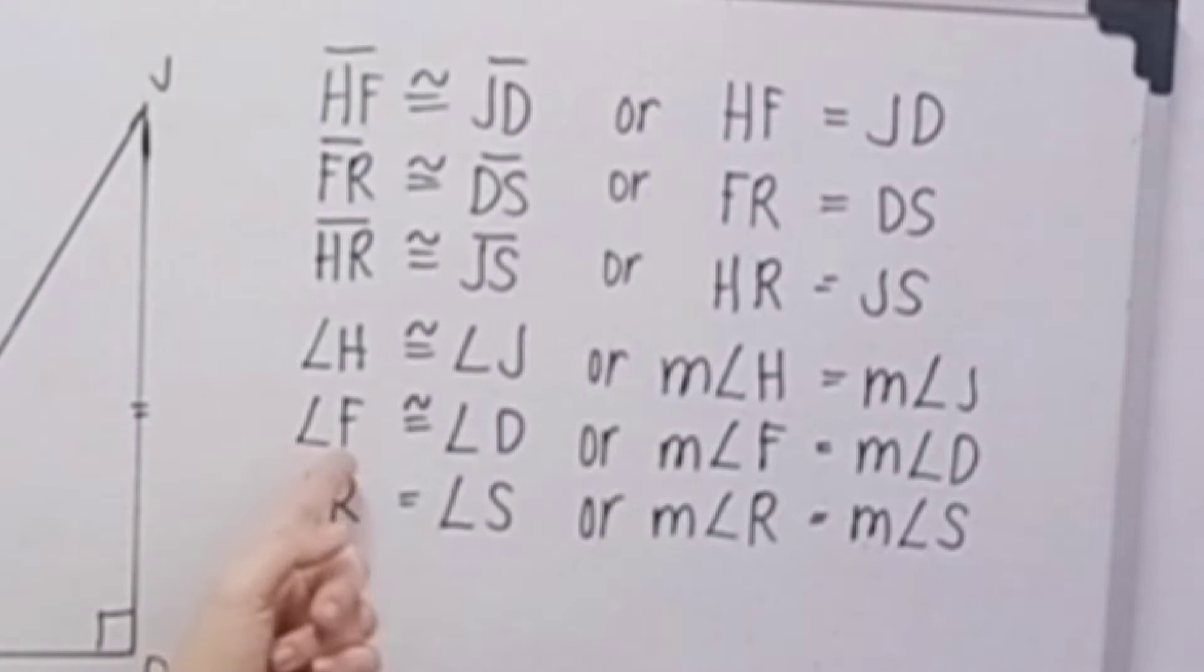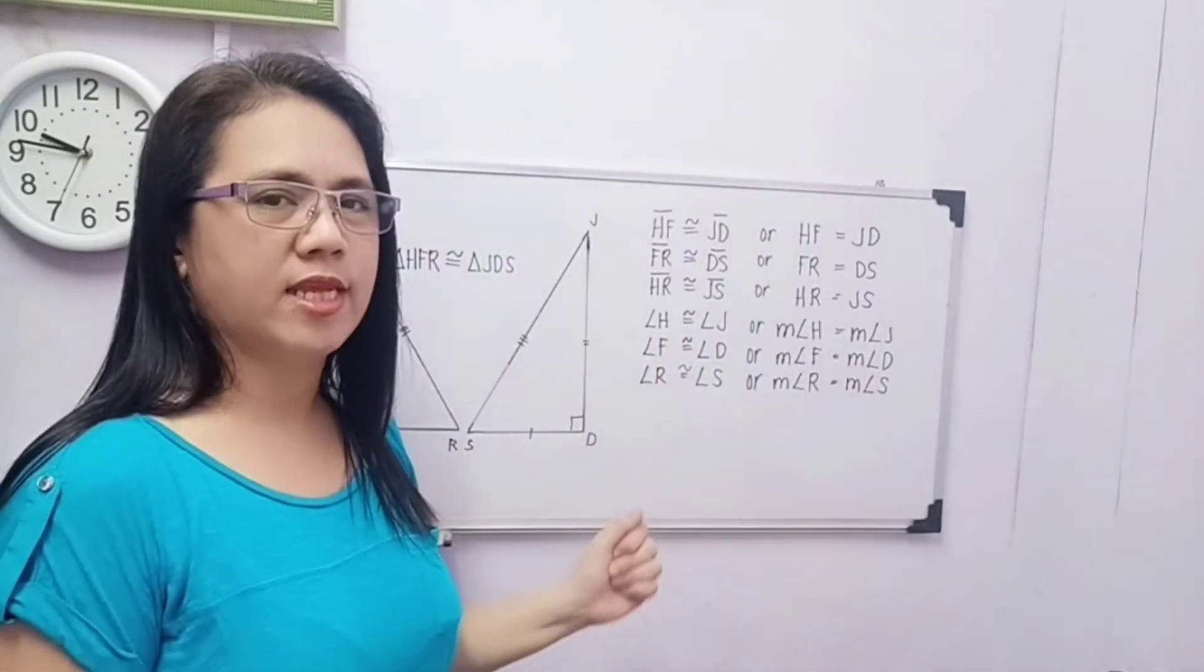Then we have angle F is congruent to angle D, or measure of angle F is equal to measure of angle D. Then the last one is angle R is congruent to angle S, or measure of angle R is equal to measure of angle S.